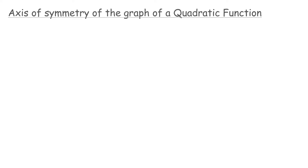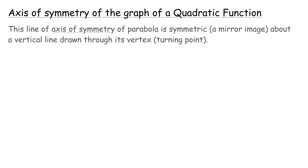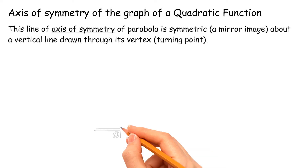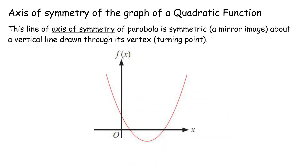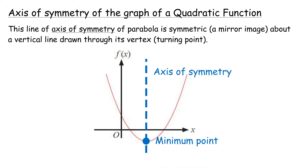Axis of Symmetry of the Graph of a Quadratic Function: the axis of symmetry of a parabola is a mirror image about a vertical line drawn through its vertex turning point.